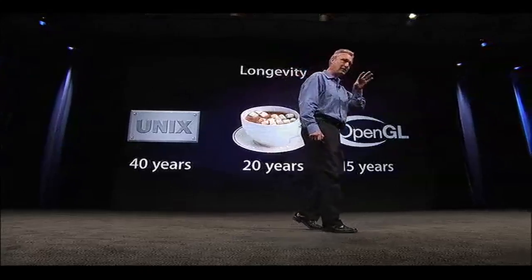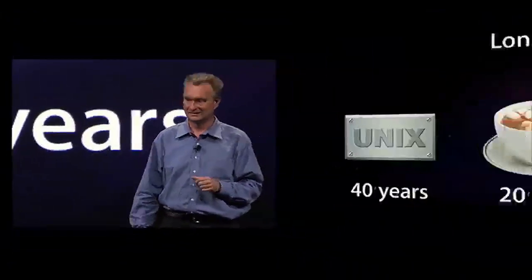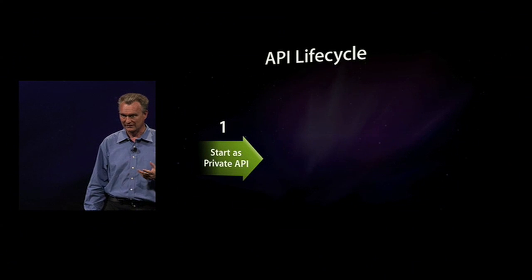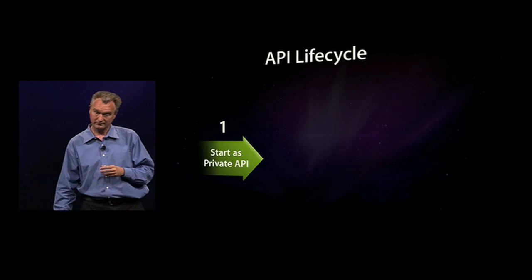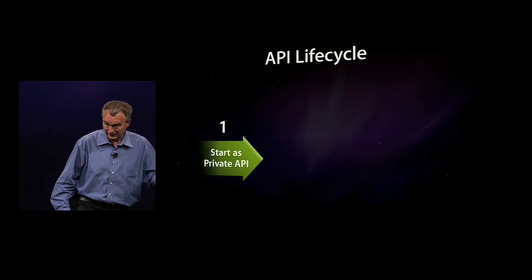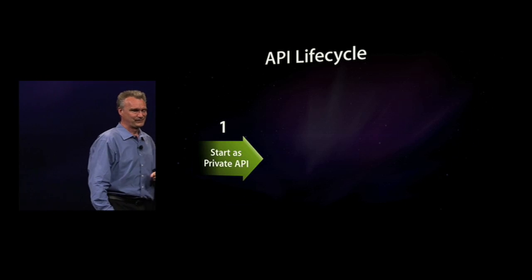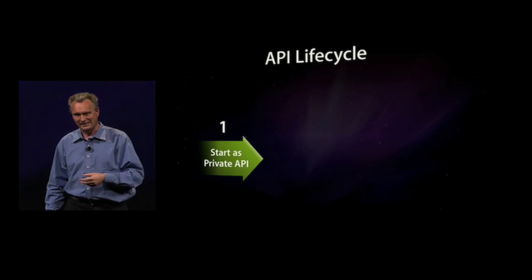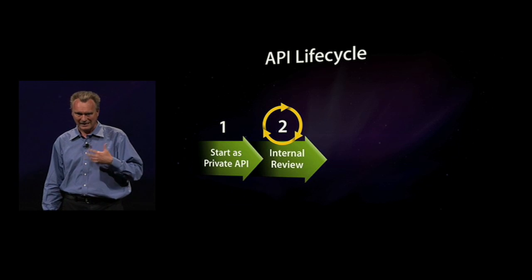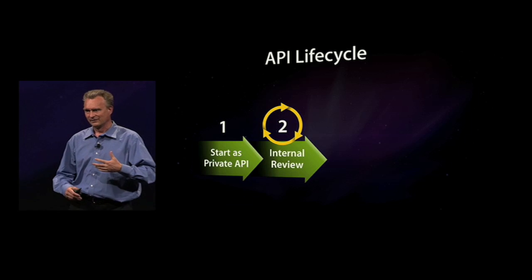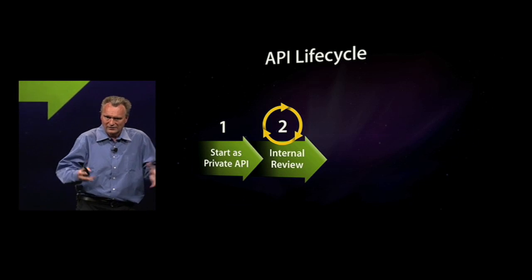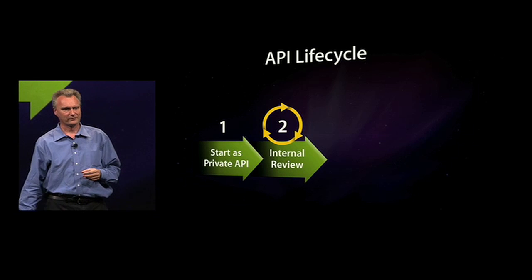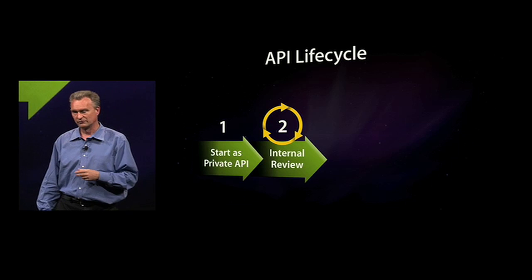So APIs last a very long time. And so we are very careful when we put that new API out there. We have a process internally to make sure our APIs are of the greatest possible quality. First, an API starts as a private API, just for us, not for you. And we iterate on it until we are happy with it. In fact, we iterate until it's kind of perfect in the sense that we don't know what to change in order to improve on it. That's an internal review process.